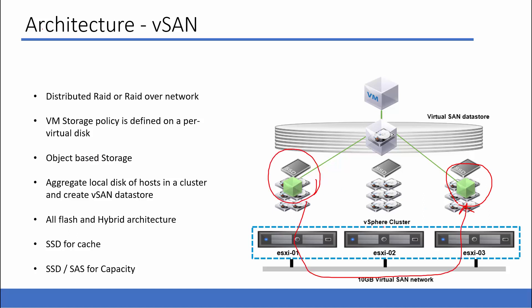VMware vSAN has two types of architecture: all-flash and hybrid. In an all-flash design, all storage devices are SSDs. In a hybrid architecture, SSDs are used for the cache layer while the capacity layer is filled with lower-performance magnetic disks such as SAS or SATA.